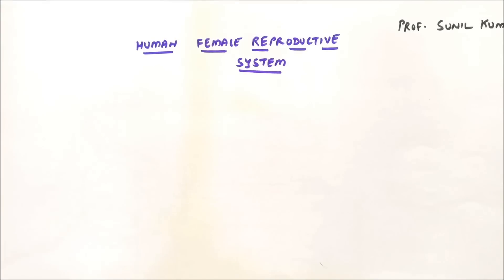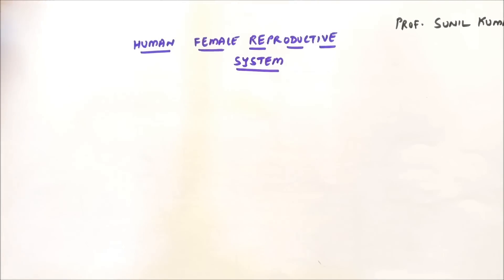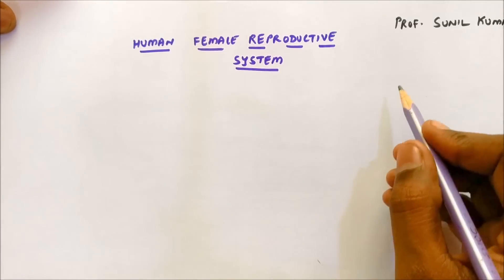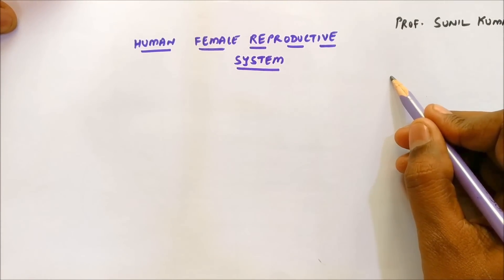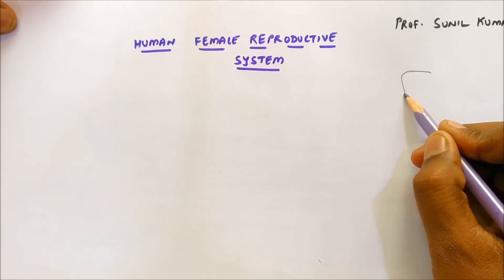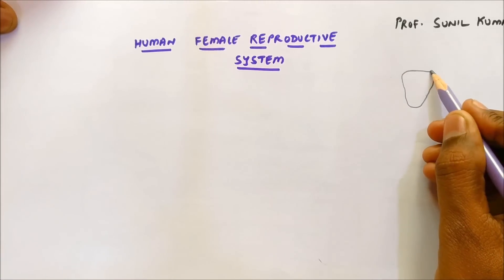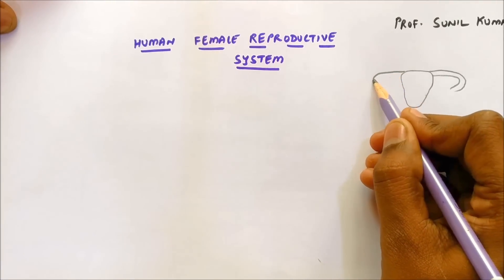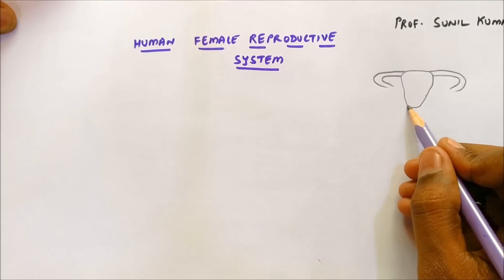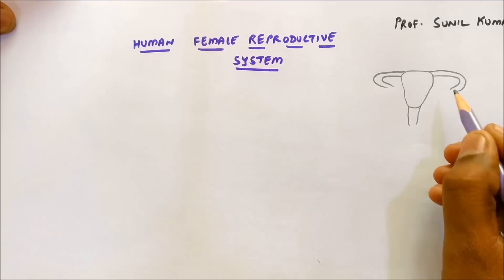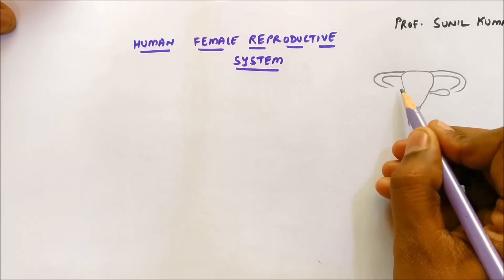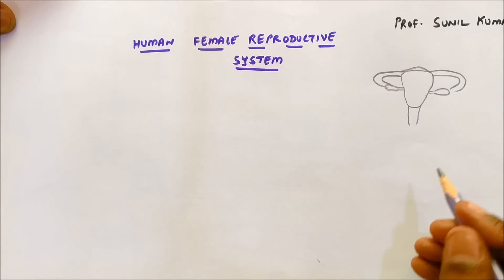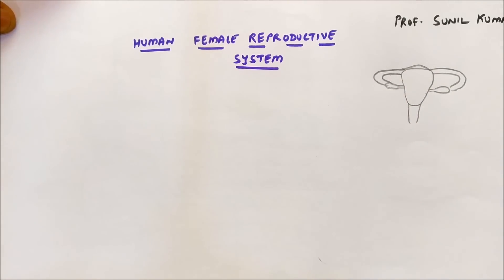Now let's understand how to draw the female reproductive system. It's very easy to draw provided you remember the structure. You draw a face somewhat like this, and after drawing the face you bring some extensions — it's like a bull. This part is the extension where we draw the ovary. This is a simplified version of the diagram.